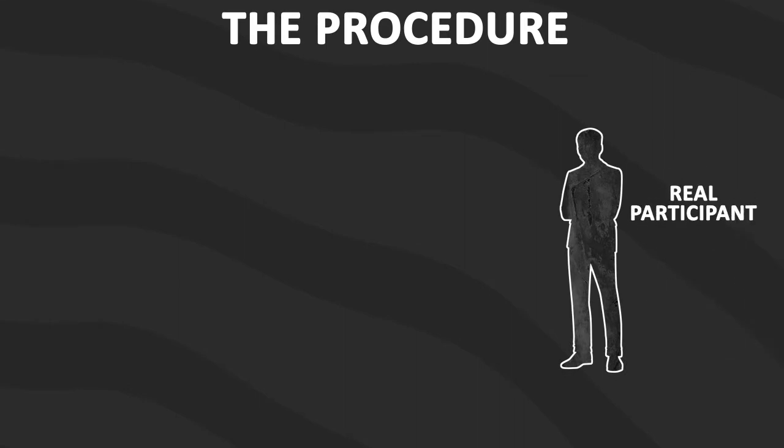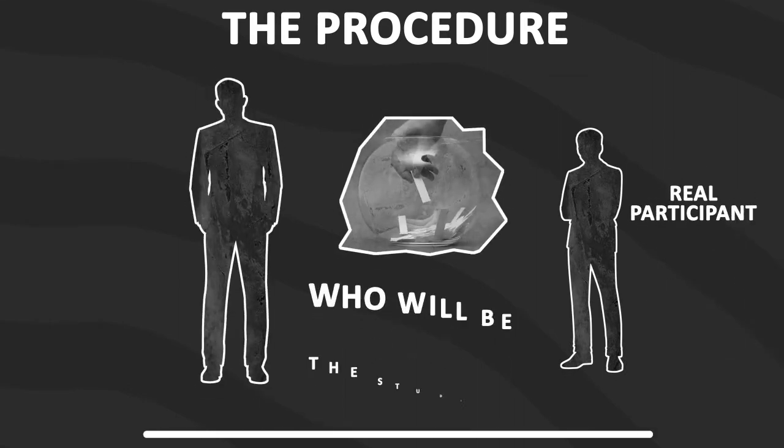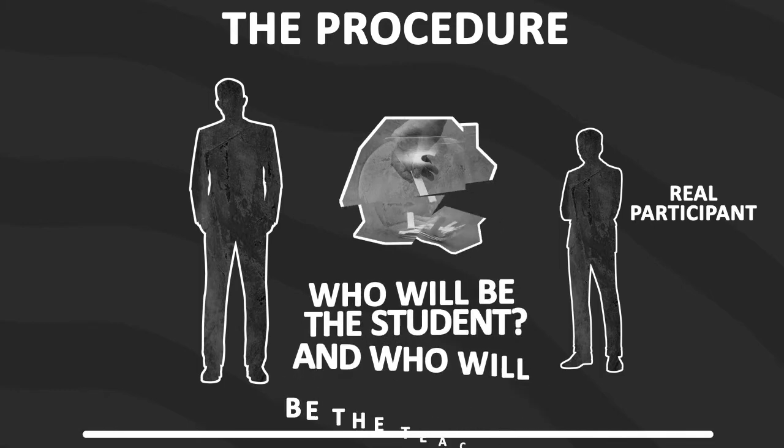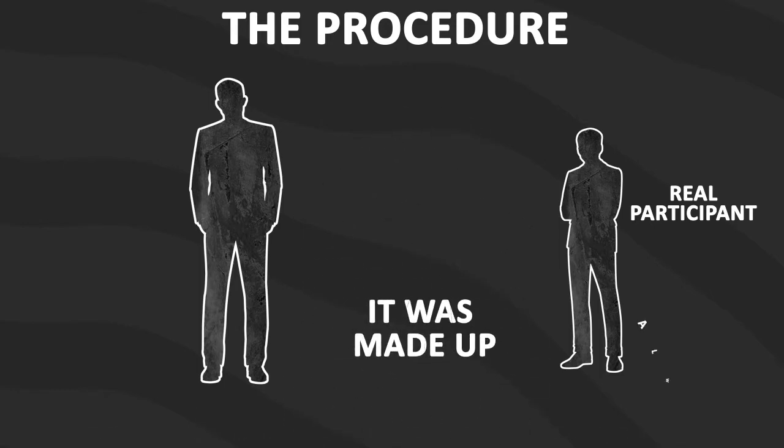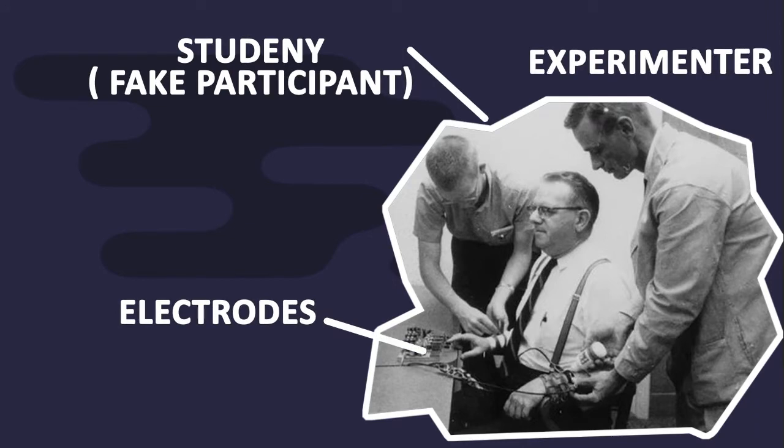The procedure was that the participants were paired with another person and they drew lots to find out who would be the student and who would be the teacher. But the draw was made up so that the participant was always the teacher and the student was one of Milgram's confederates pretending to be a real participant. The student was taken into a room and had electrodes attached to his arms.